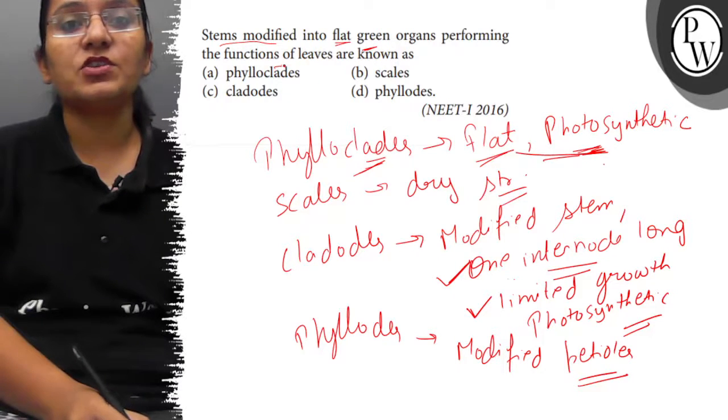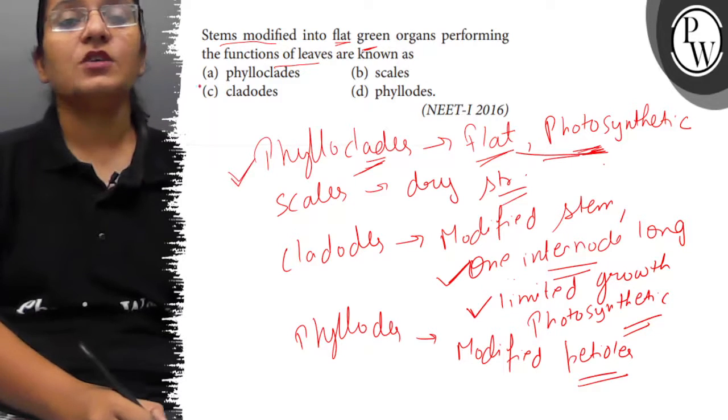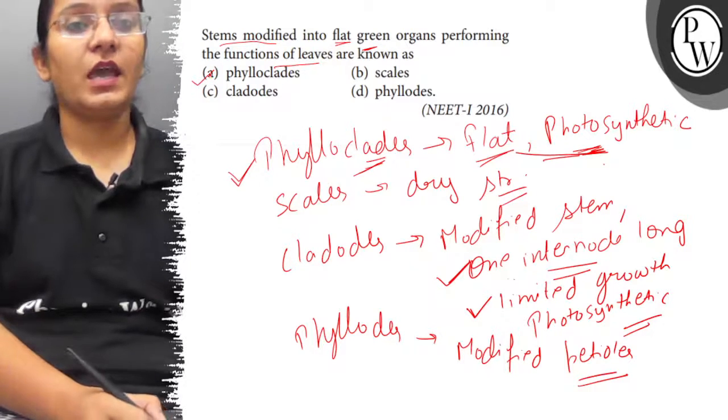Green photosynthetic means it performs the function of leaf - that is phylloclades. So the correct answer for this question is option A. Thank you.